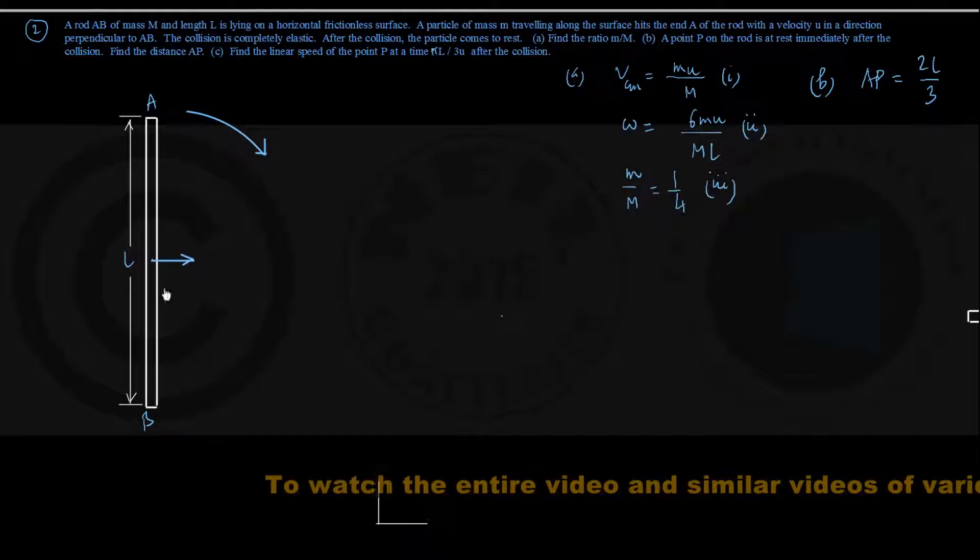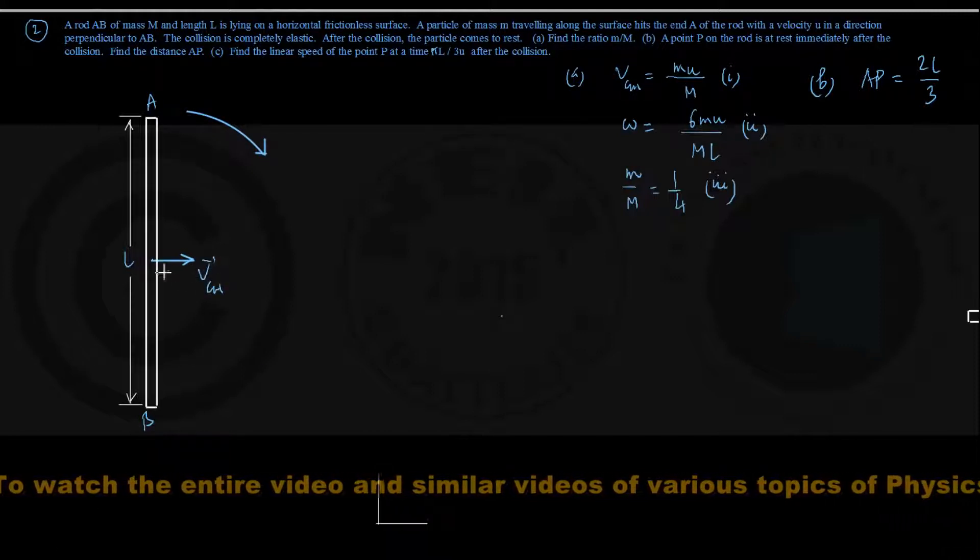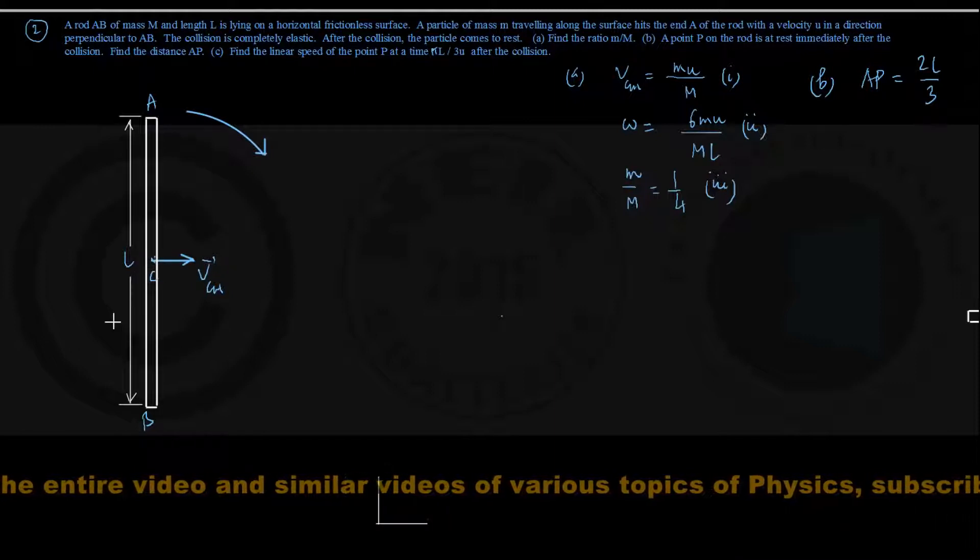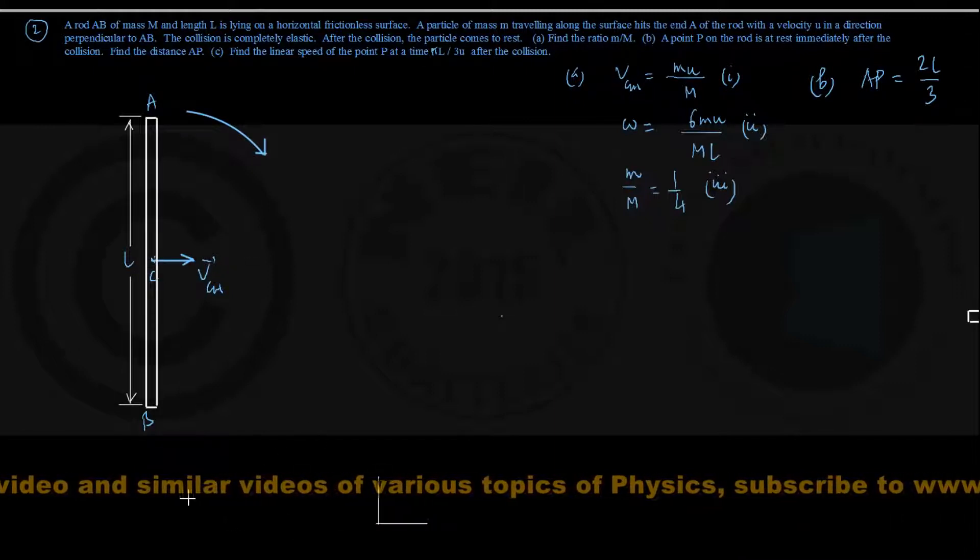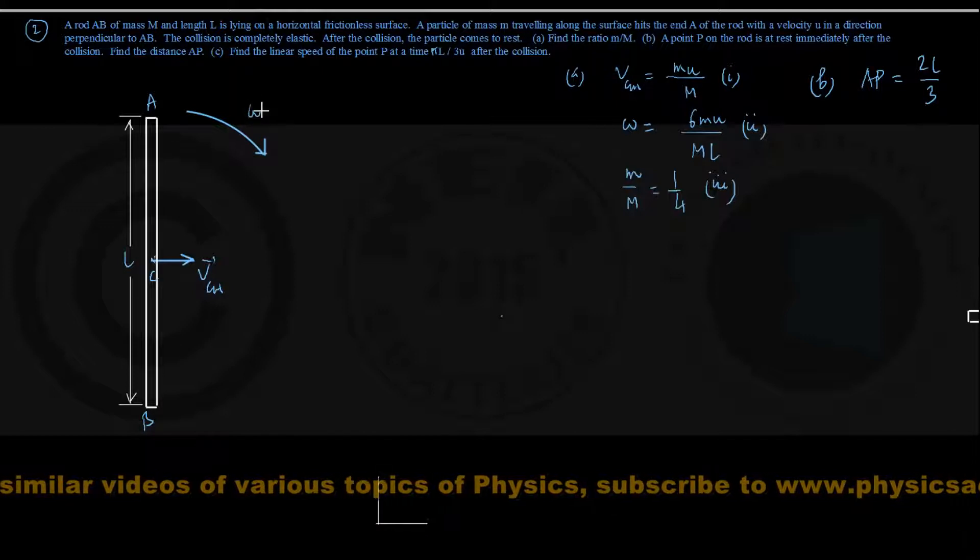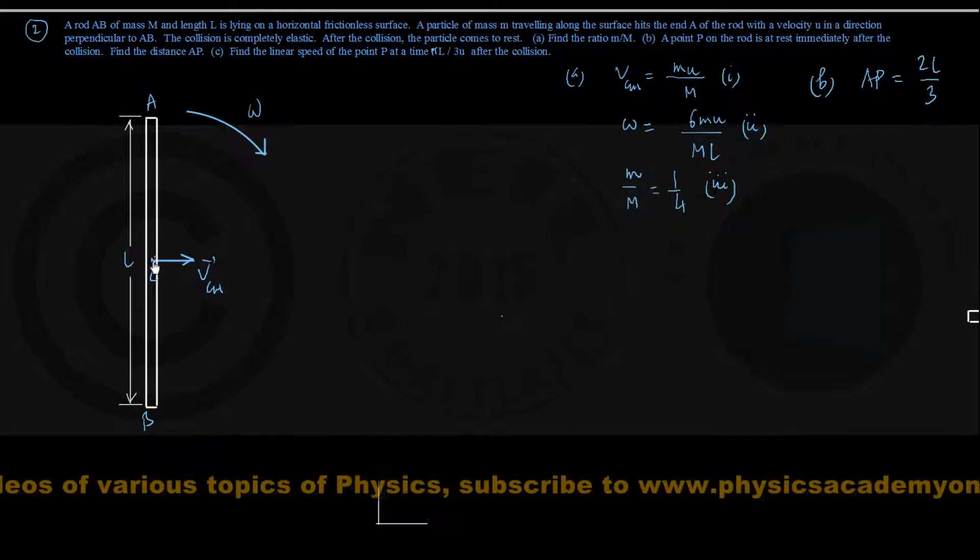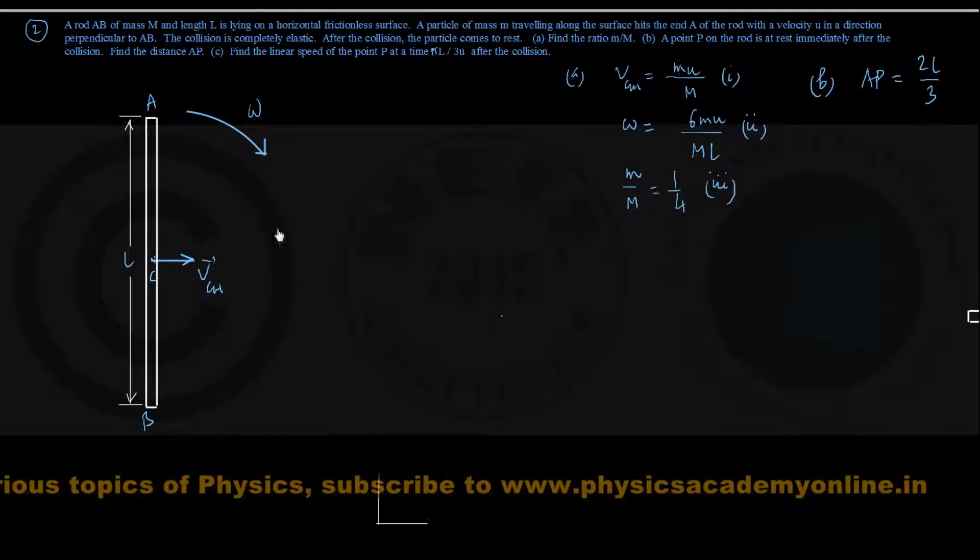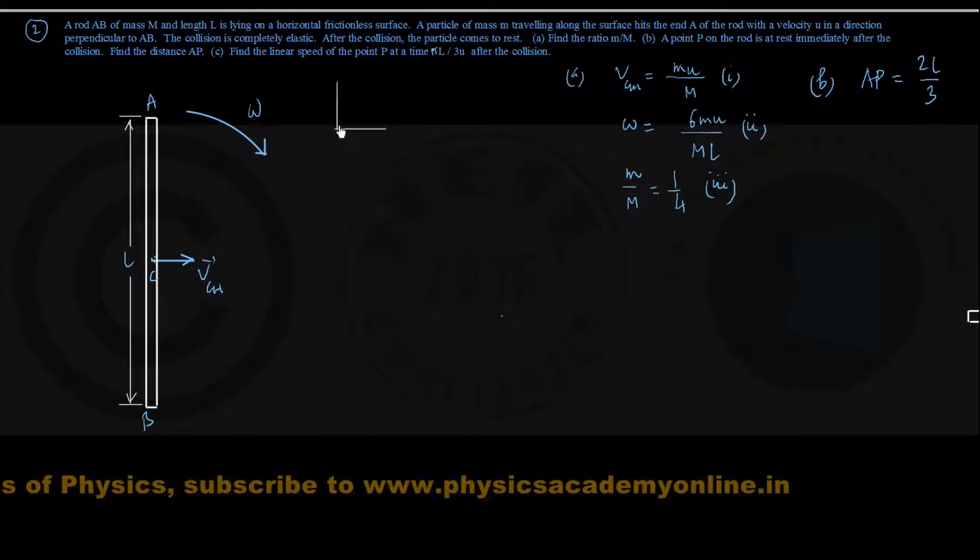One is center of mass velocity VCM pointing to the right. This point C is the center of mass and the rod has angular velocity omega about a vertical axis through the center of mass. These two motions take place simultaneously.